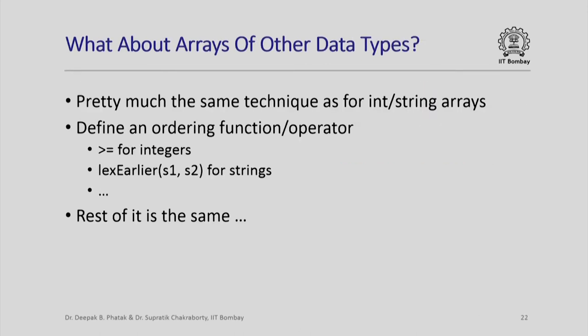If we have the comparison function lex_earlier, we can also apply merge sort to strings. The steps are the same: divide the array into two subarrays, sort each recursively, and merge the two sorted subarrays. In the merge step, instead of an integer array, we pass an array of strings and use a temporary string array. The merging loop is almost identical to the one for integers, except we use the lex_earlier function to decide which element comes next. For any other data type, all we need is to define an ordering function or operator — like greater-than-or-equal for integers or lex_earlier for strings — and the rest is exactly the same.